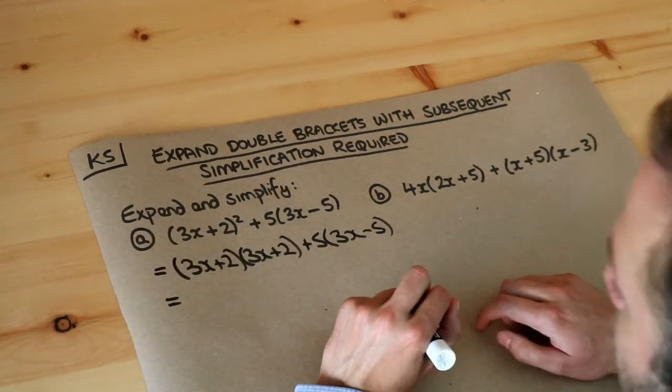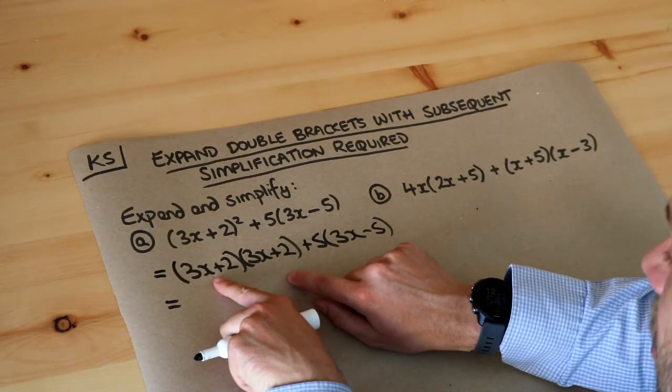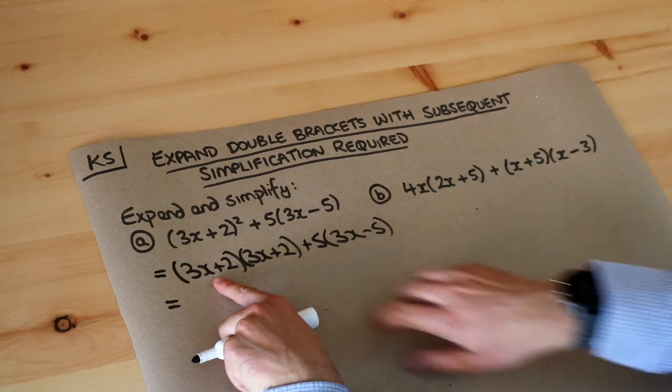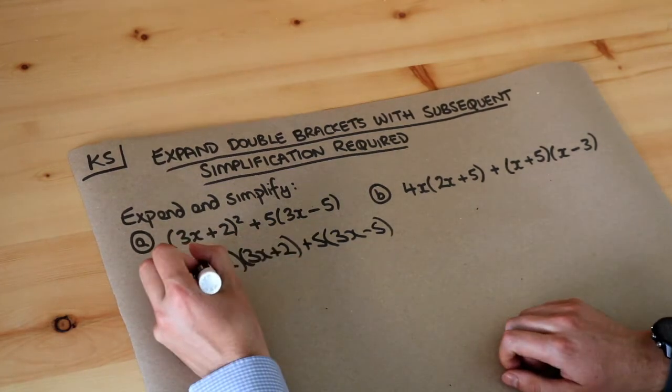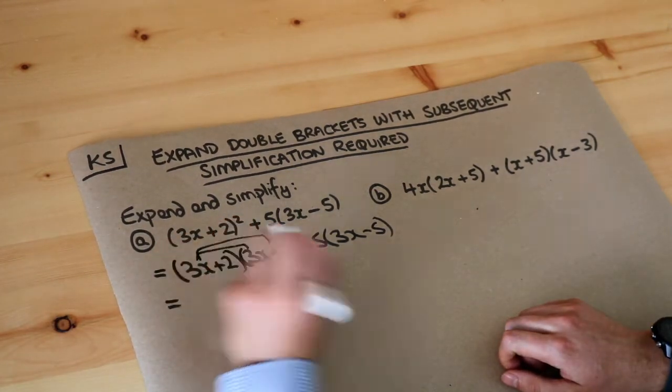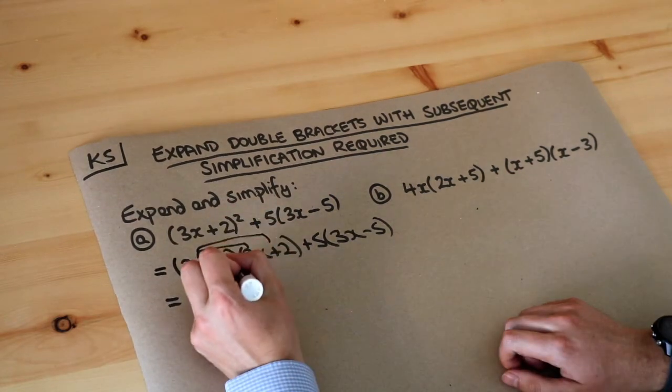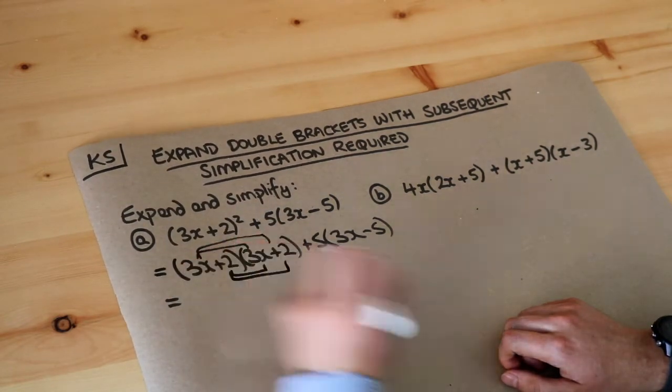So remember to expand out two brackets we do each thing in the first bracket multiplied by each thing in the second. So the 3x here gets multiplied by each of those things in the second bracket and the 2 in the first bracket gets times by each of the things in the second bracket.